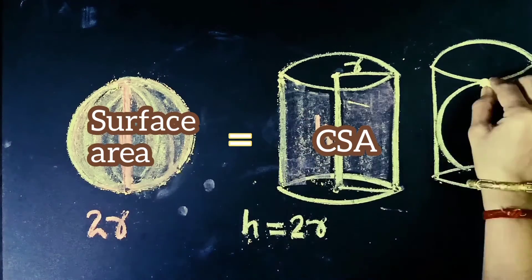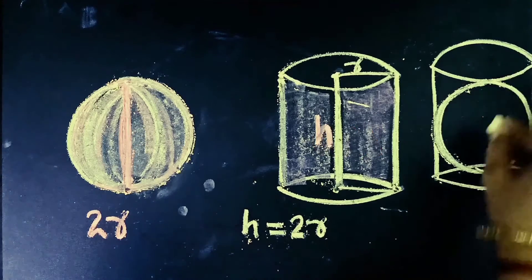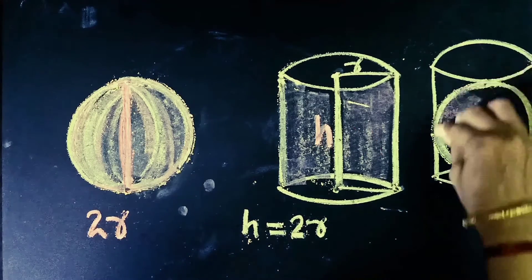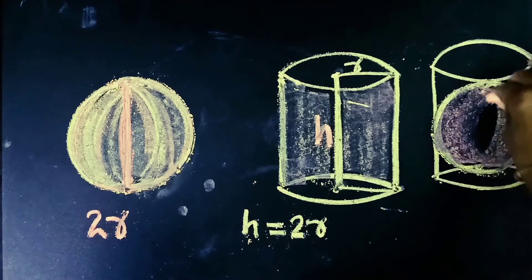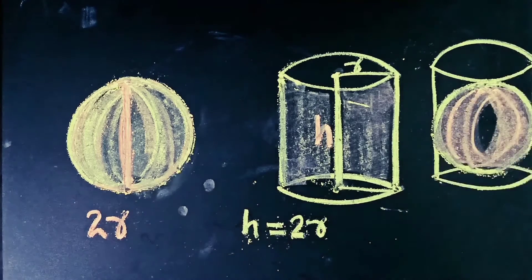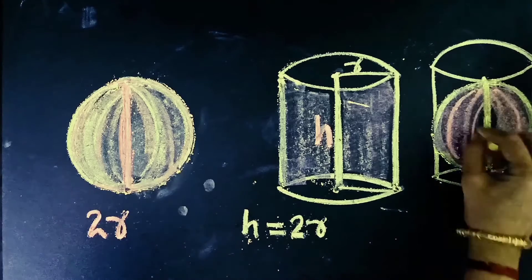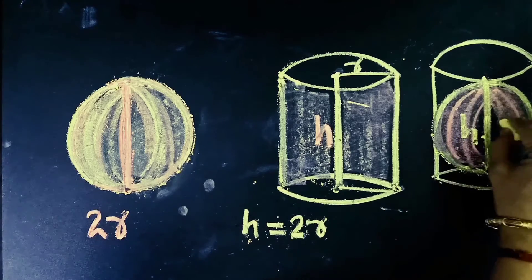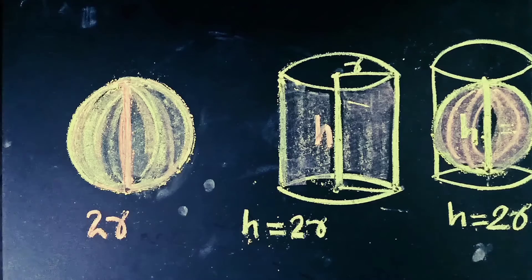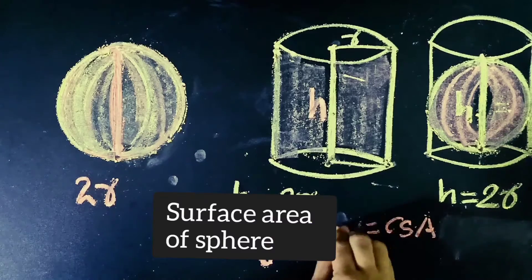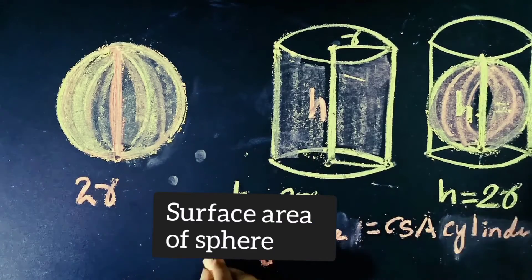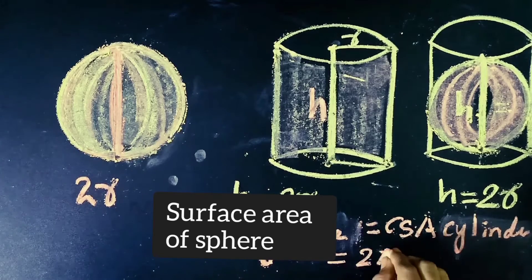The curved surface area of a cylinder equals the surface area of a sphere when the base radius is r and the height of the cylinder equals the diameter of the sphere, that is h equals 2r. We know that the curved surface area of a cylinder is 2 pi r h. Substituting h equals 2r, we can easily derive the surface area of a sphere.